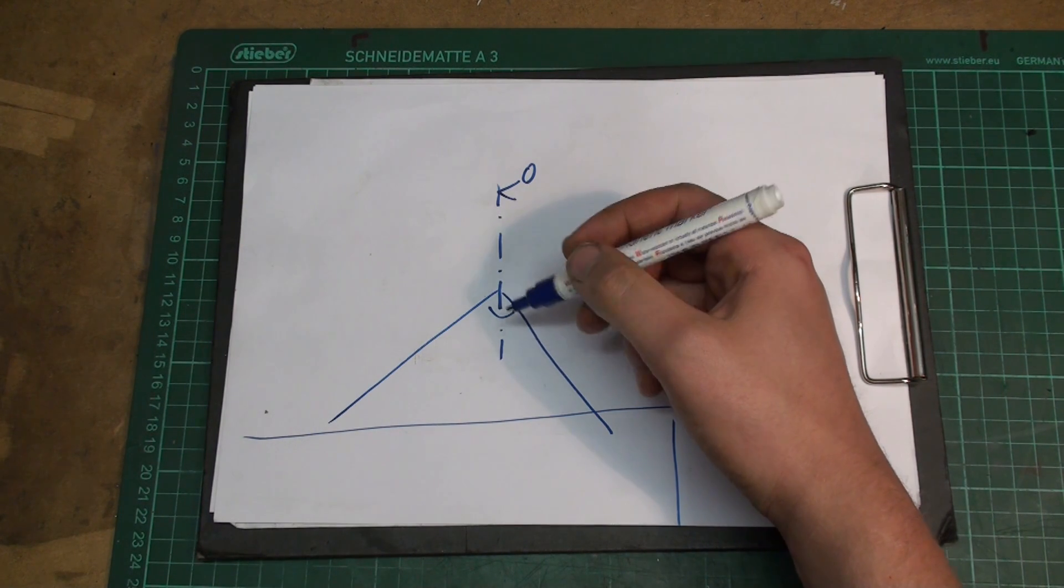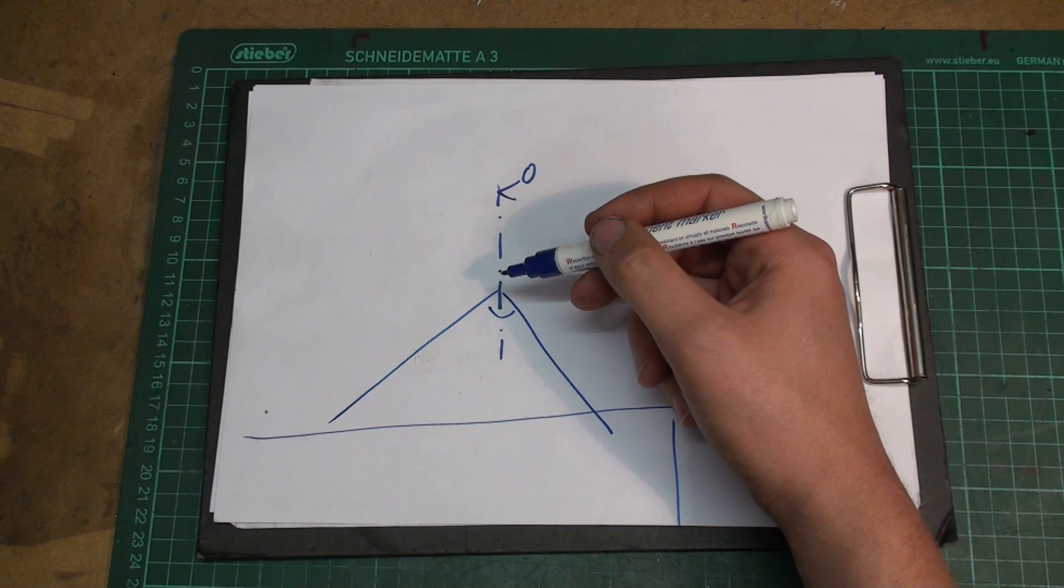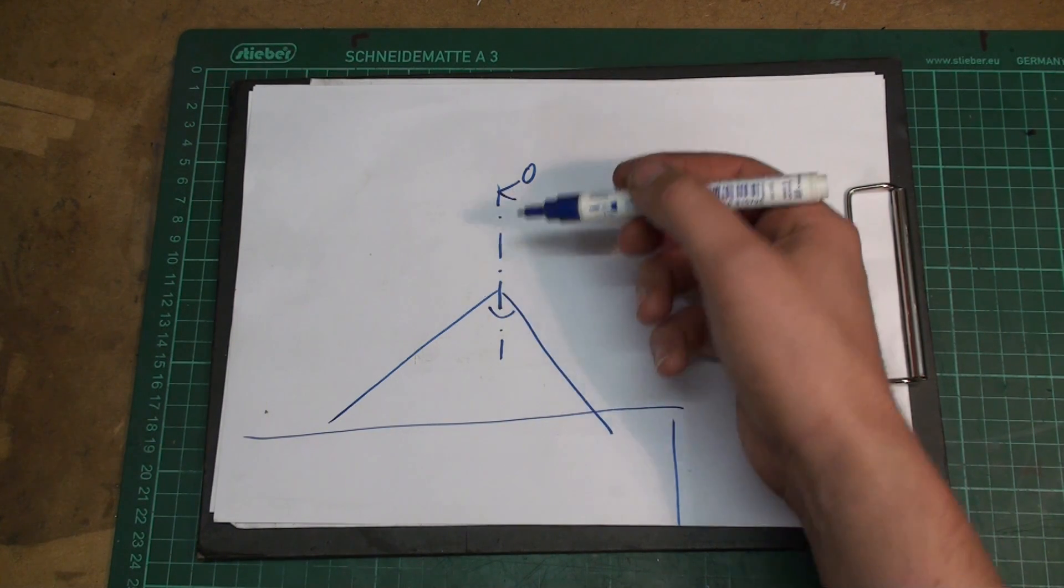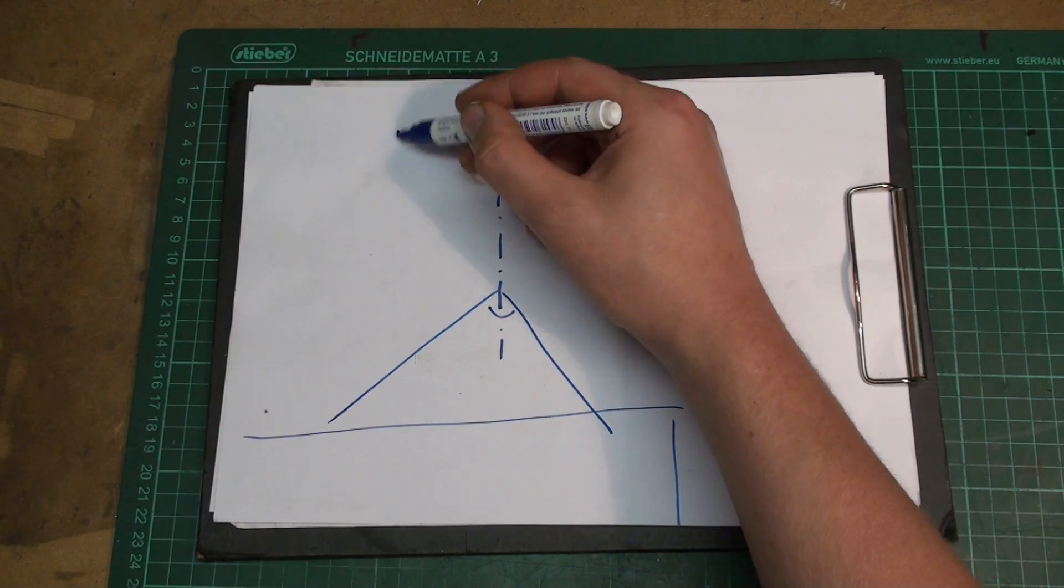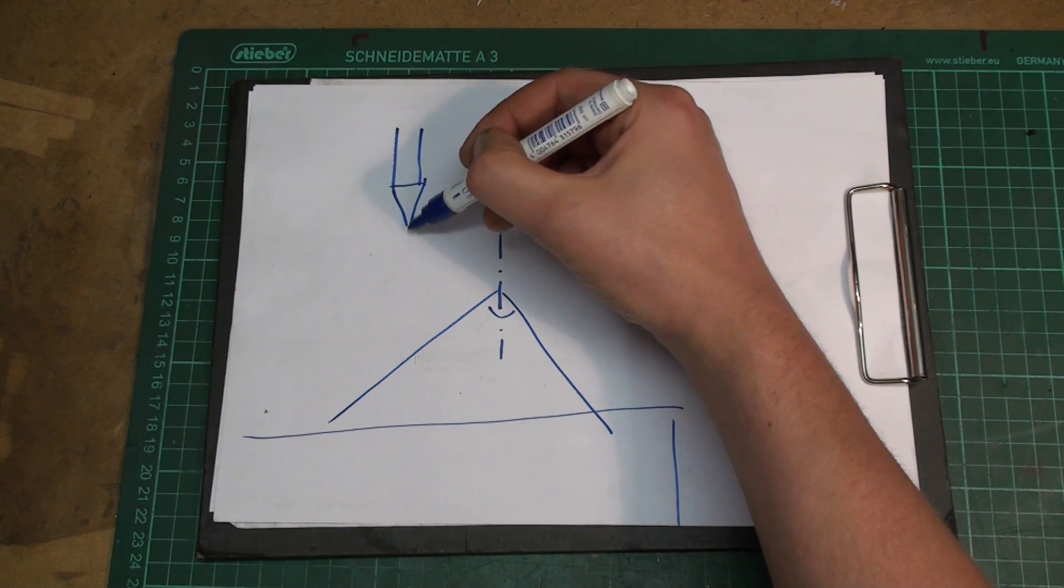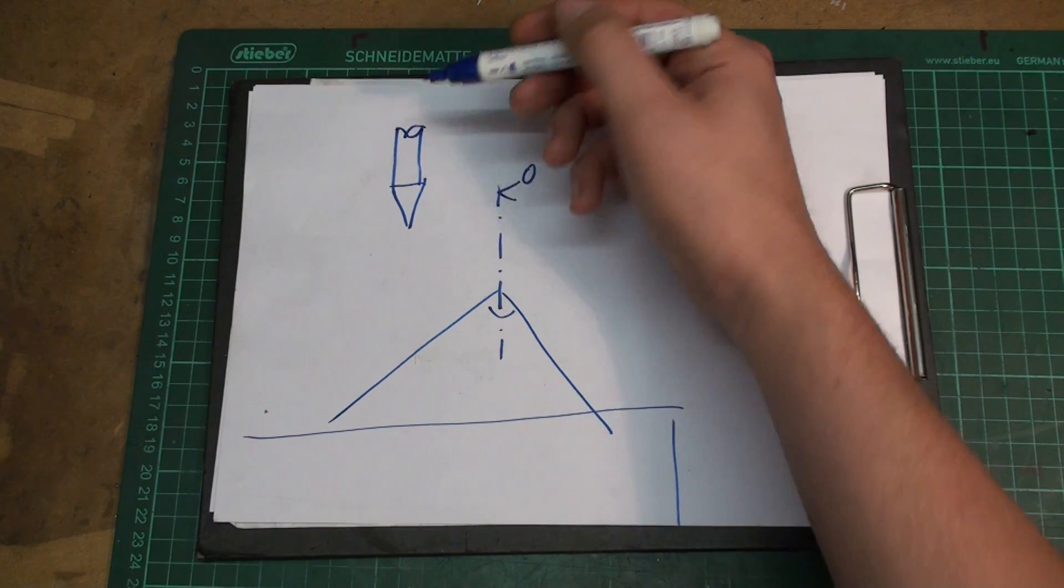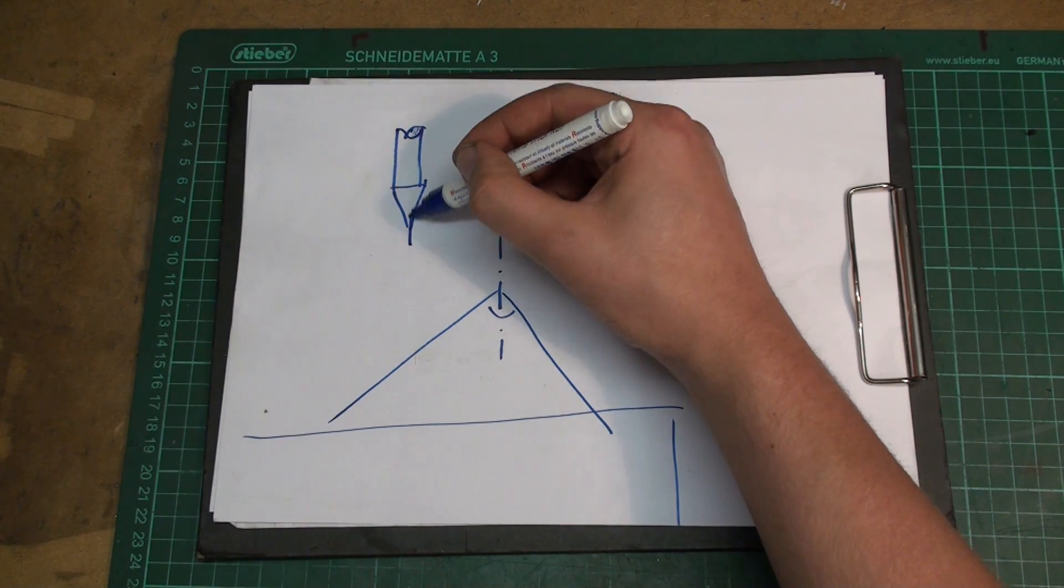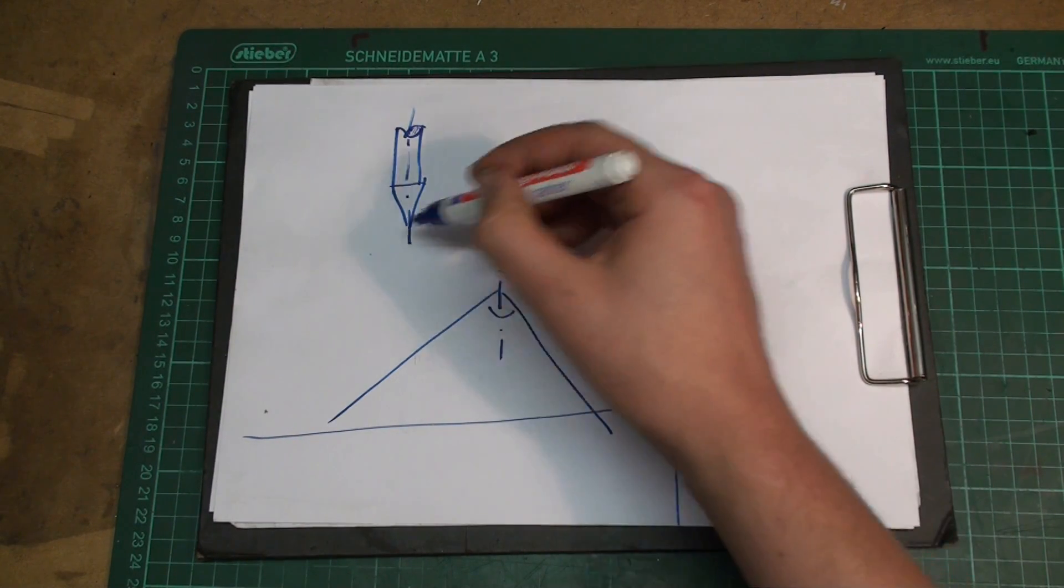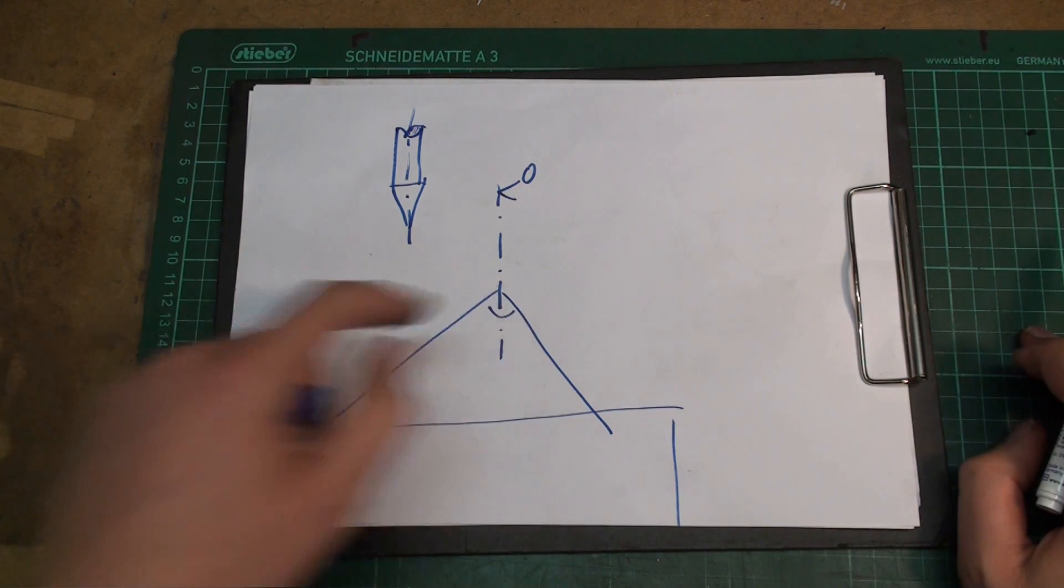What you can do is, you can chuck up a pointy round, a needle, cylindrical ground needle, and align it by eye with the edge. Using a magnifier, you can reach pretty good precision with that. But that depends a lot on the machinist, how close he gets it.